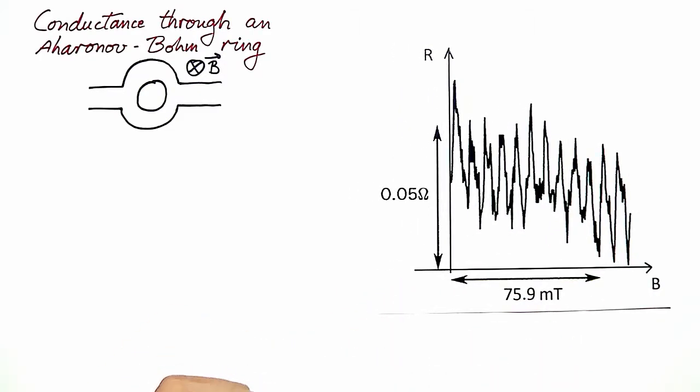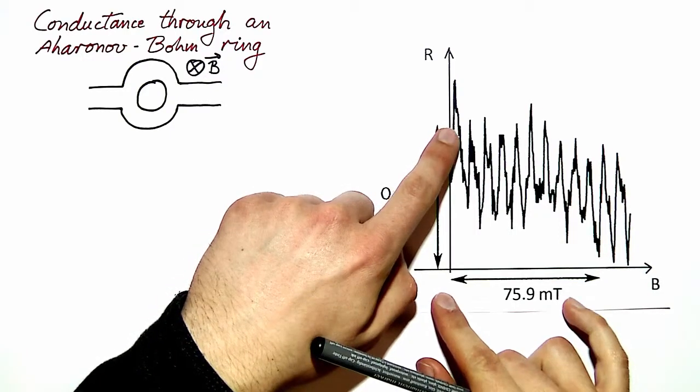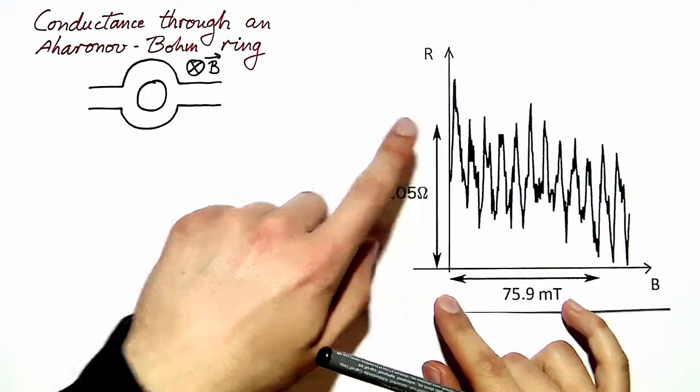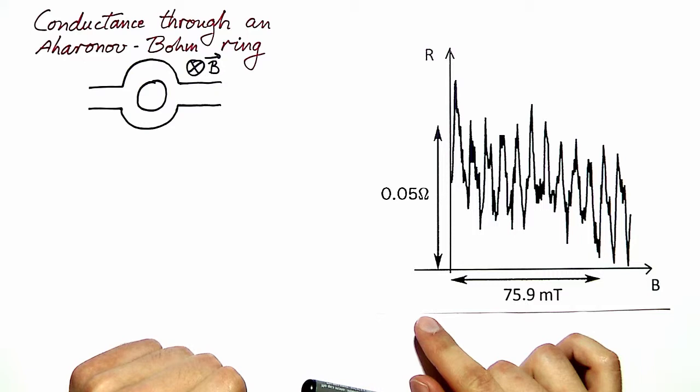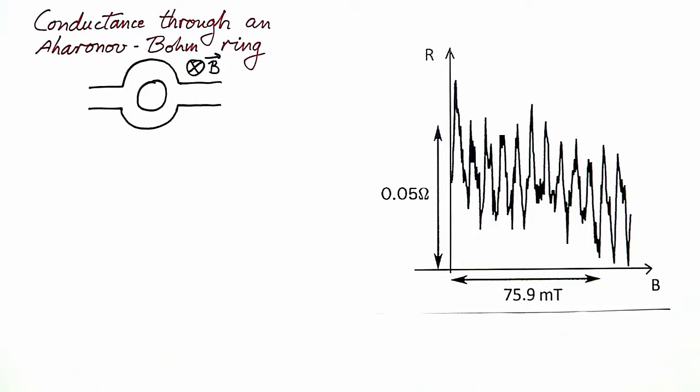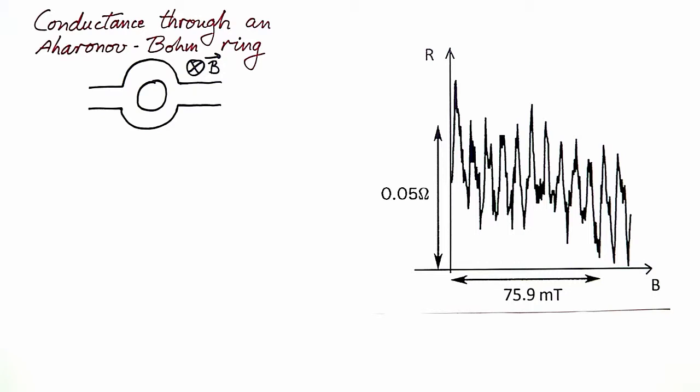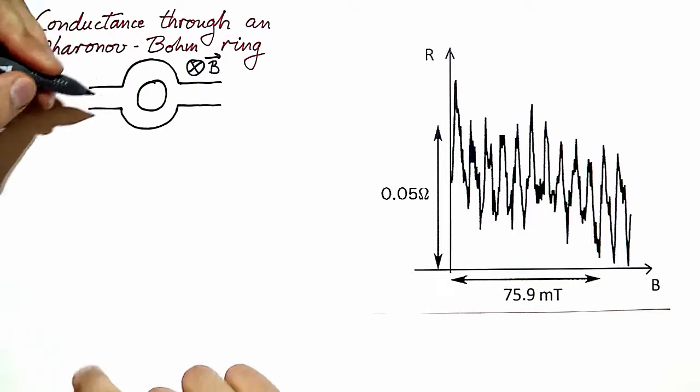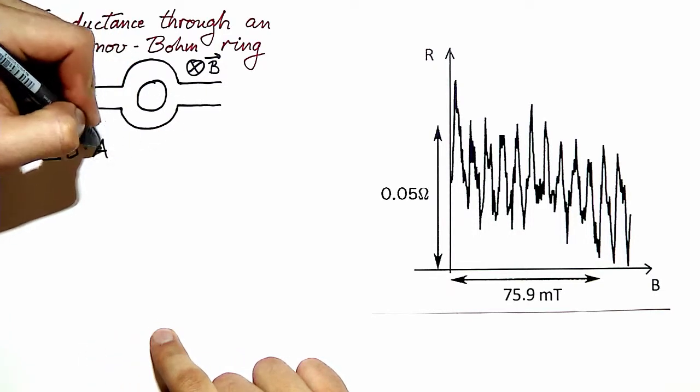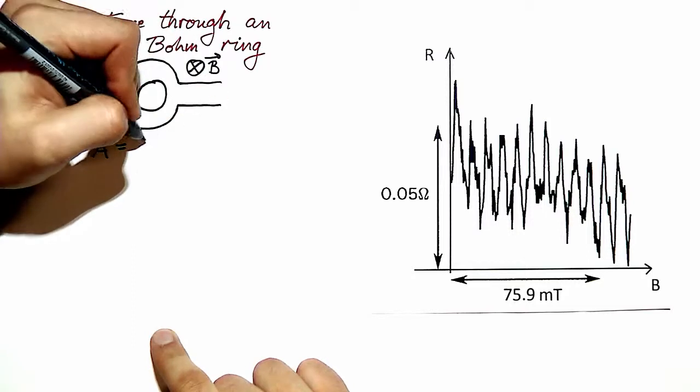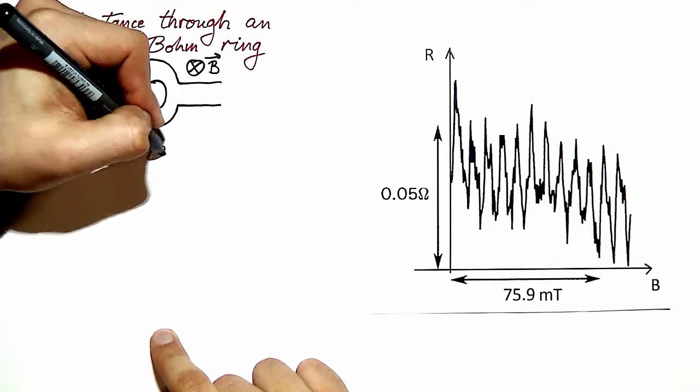Keeping in mind that one period of Aharonov-Bohm oscillations corresponds to one flux quantum added to the ring, we can from the frequency that we see in this picture calculate the radius of the ring. The interval in the magnetic field corresponding to one period times the area of the ring is one quantum of flux.